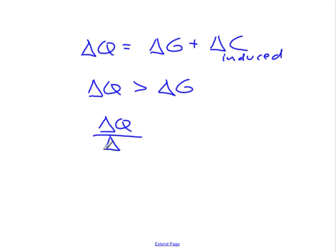Then the increase in output must be greater than the increase in government spending that caused it. Therefore, the multiplier, which is the ratio of delta Q to delta G, must be greater than 1 because the thing on top is bigger than the thing in the bottom. That's a wrap.